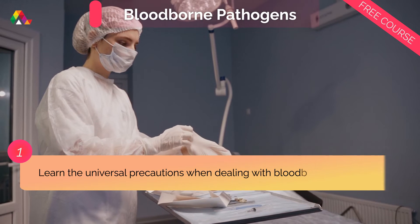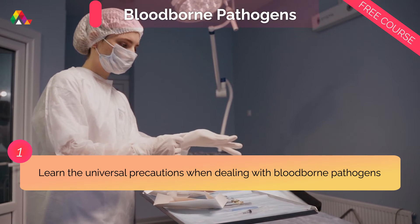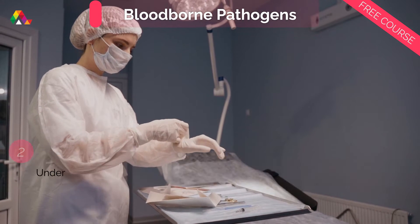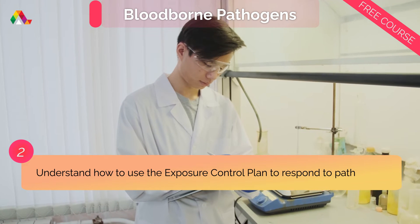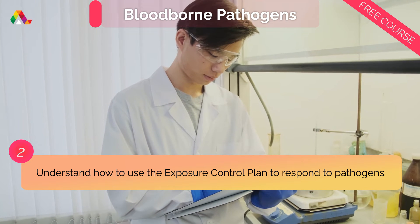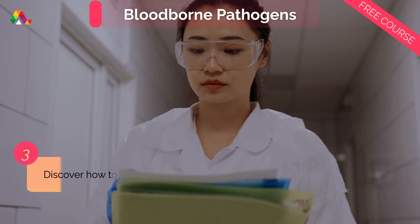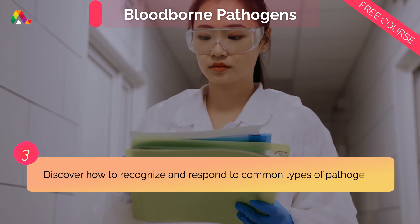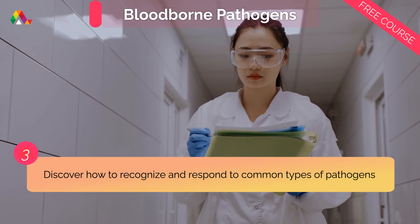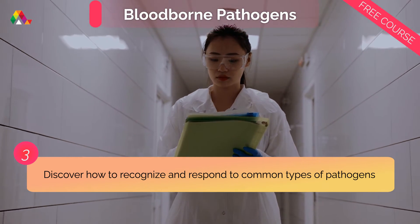In this course, you'll learn about the universal precautions taken when dealing with bloodborne pathogens. Understand how to use the exposure control plan to respond to pathogens systematically. Discover how to recognize and respond to common types of pathogens such as hepatitis B, C, and HIV.